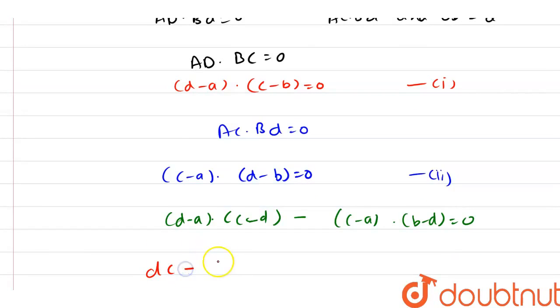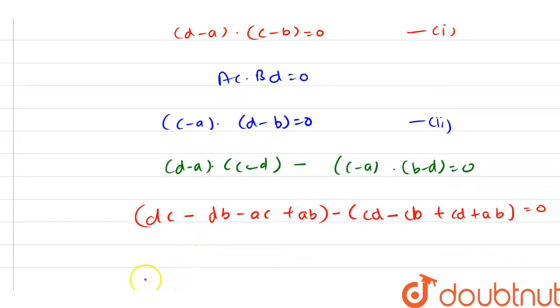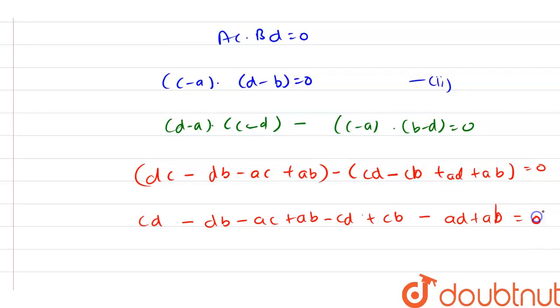After solving further, here we have DC minus DB minus AC plus AB minus CD minus CB plus AD plus AB, and that is equal to 0.